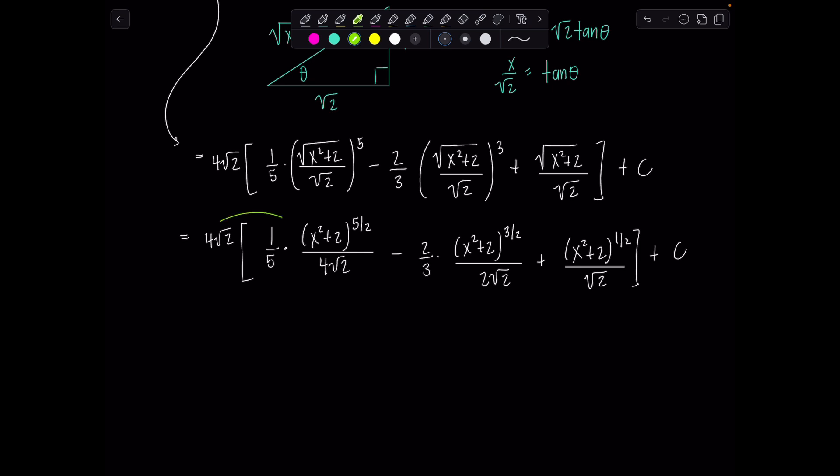Last thing. We're just going to distribute the four rad two through. And I'm just going to simplify as I distribute. It'll cancel ever so beautifully on that first term. So one fifth x squared plus two to the five halves minus. Now check this out. This two and this two cancel. And then this rad two is going to cancel with the rad two from the four. So all I'll have left is four over three minus four thirds x squared plus two to the three halves plus. And then just the rad two cancels on that last term. So I've got four times x squared plus two to the one half plus c. And I would leave it like this. I think this is the most simplified.